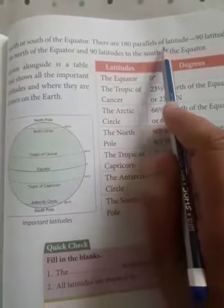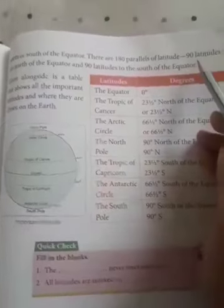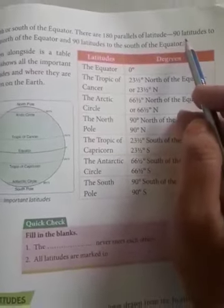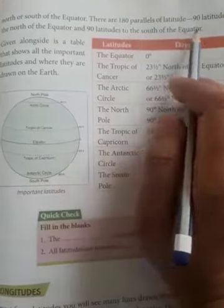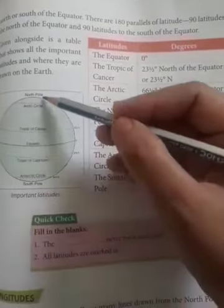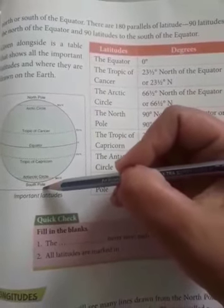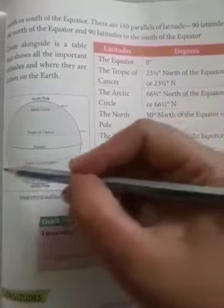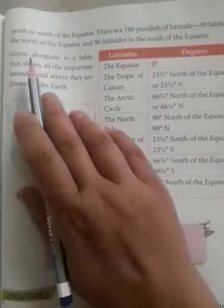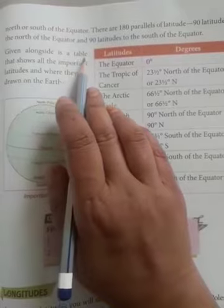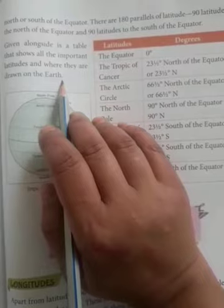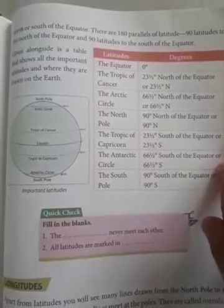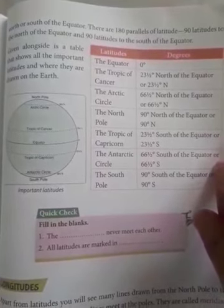There are 180 parallels of latitudes — 90 latitudes to the north of the equator, and 90 latitudes to the south of the equator. Given alongside is a table that shows all the important latitudes and where they are drawn on the earth. In the table, the important latitudes are listed.